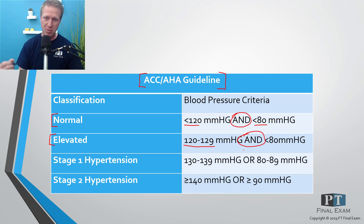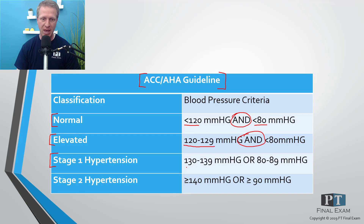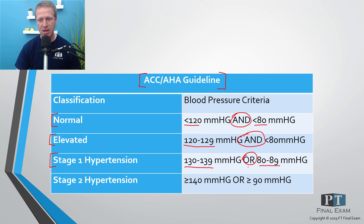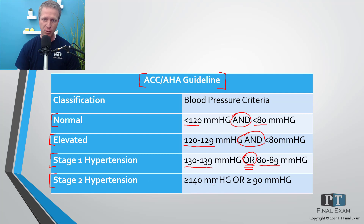Elevated means slightly elevated — a concern, but probably not treatable yet, just being watched. Stage 1 hypertension is where you have a systolic blood pressure of 130 to 139 OR — and this is the big key — a diastolic blood pressure over 80 to 89. Stage 2 hypertension, the most severe, is where you are above 140 systolic OR above 90 diastolic.